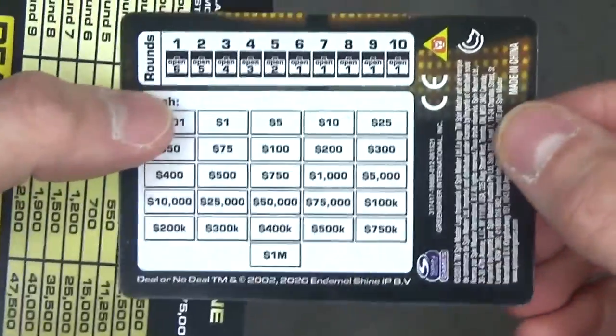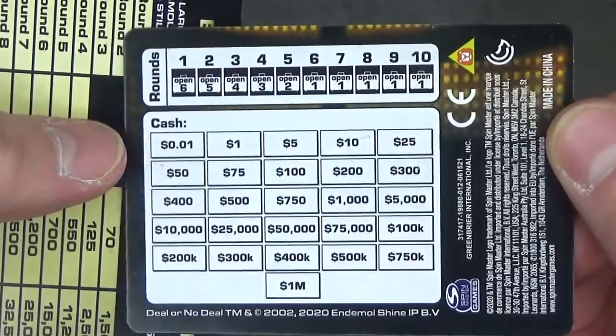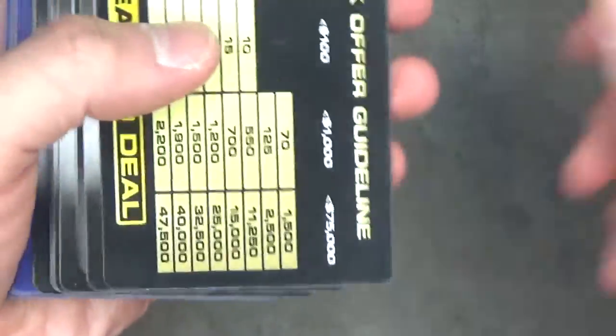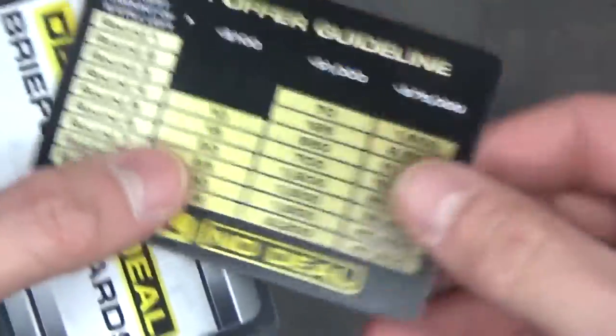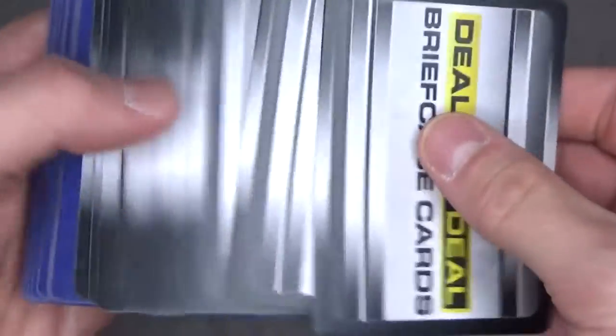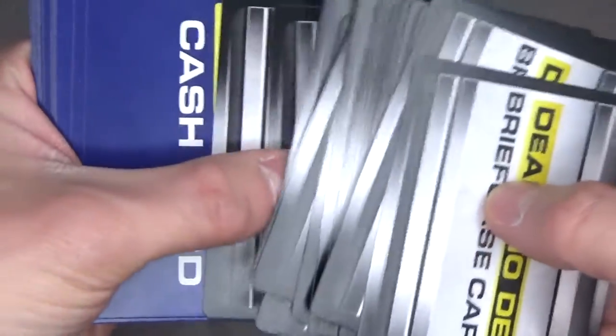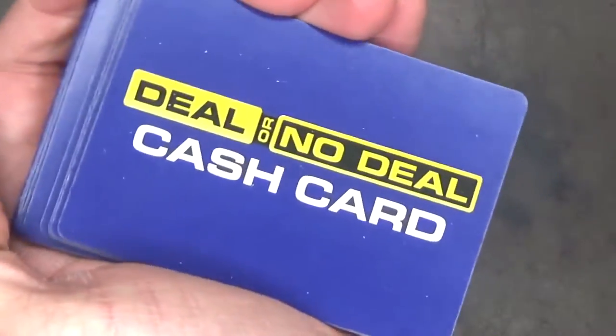You get a card that has instructions on one side and a reference guide for the rounds and cash amounts. You have a double-sided bank offer guideline card, 26 briefcase cards, and 26 cash cards.